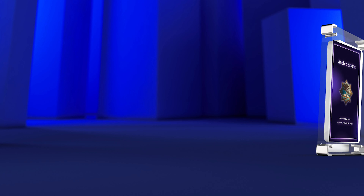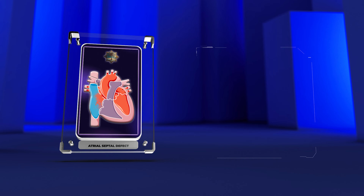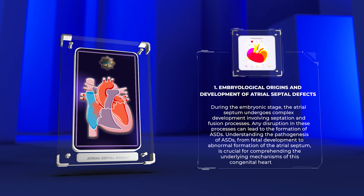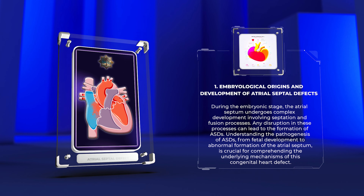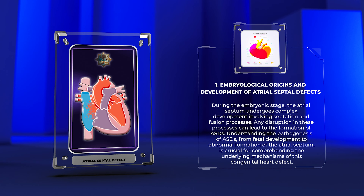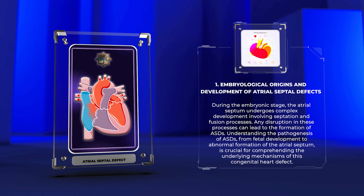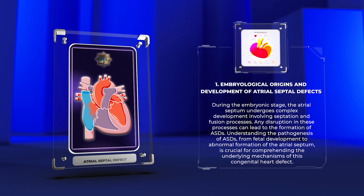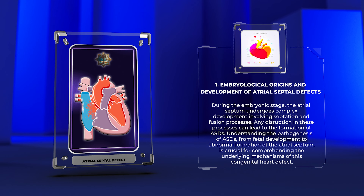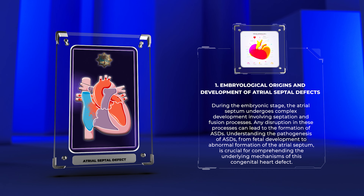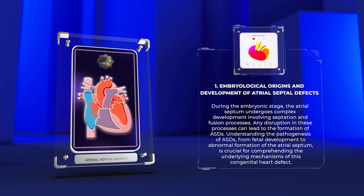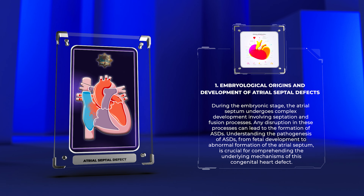During the embryonic stage, the atrial septum undergoes complex development involving septation and fusion processes. Any disruption in these processes can lead to the formation of ASDs. Understanding the pathogenesis of ASDs, from fetal development to abnormal formation of the atrial septum, is crucial for comprehending the underlying mechanisms of this congenital heart defect.